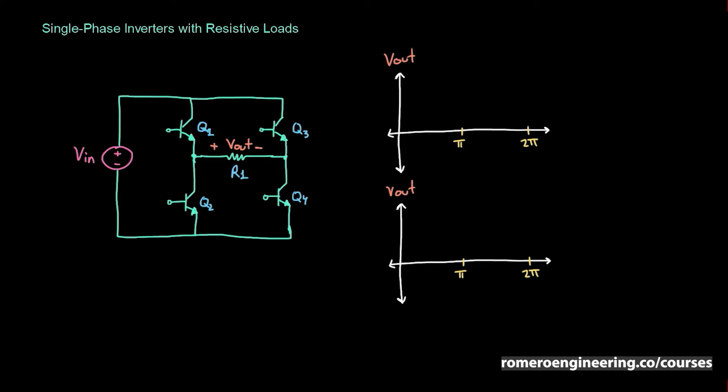Remember that what we're trying to do with an inverter is to make an alternating voltage at the output using a DC voltage at the input. We need to find a way to alternate the input voltage with respect to the output such that we can get both a positive and a negative voltage at the output, using a positive voltage at the input. We're going to alternate the switching of transistors Q1 through Q4 to achieve that.